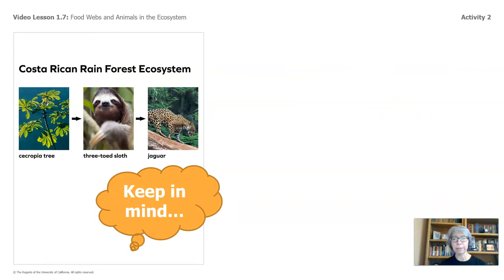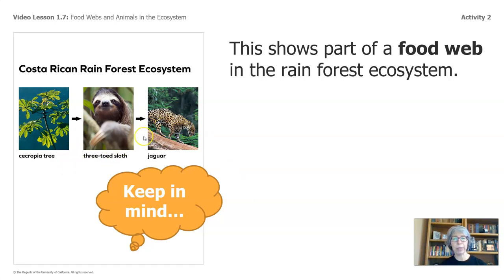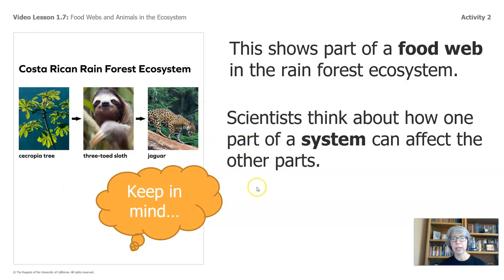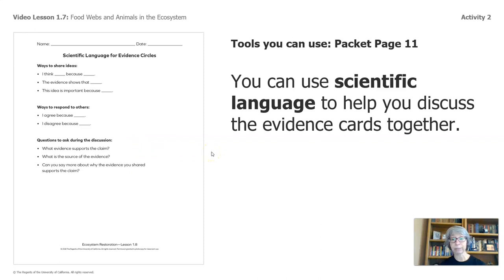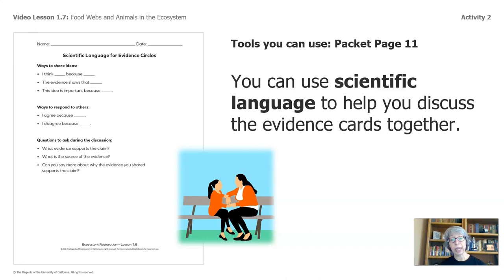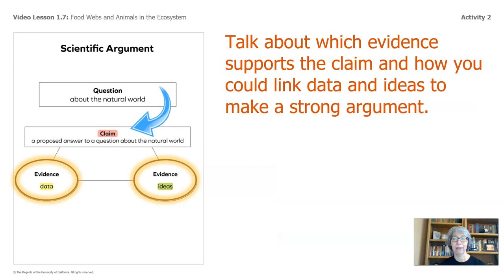This shows part of a food web in our rainforest ecosystem. Scientists think about how one part of a system can affect the other parts. You can use scientific language tools on packet page 11 to help you discuss the evidence cards together — phrases like 'this idea is important because,' 'I agree,' 'I disagree,' and questions you can ask during the discussion. These are super helpful in helping you focus on what's being said about the evidence cards, not who's saying it. Talk about which evidence supports the claim and how you could link data and ideas to make a strong argument.